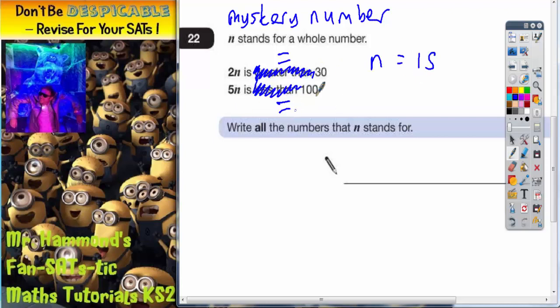If 5 lots of the mystery number was 100, if you share 100 by 5 and work in reverse, 100 shared by 5 would be 20. So in that case, N would have to be 20, because 5 twenties make 100.